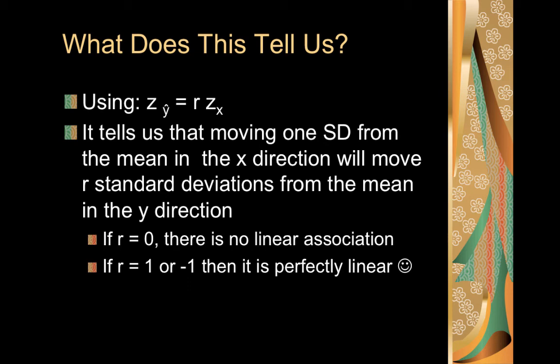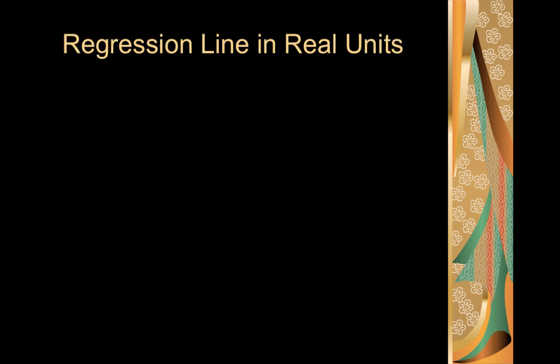Therefore, if r is 0, there's no linear association because we would multiply the z-score in our x direction by 0, so y would equal 0. It wouldn't work. But if r is 1 or negative 1, then it's perfectly linear, because we end up with the z-score for our y values equaling the z-score for our x values, and it'll end up being a perfectly linear line. The biggest purpose for this is that it gives us a way to end up calculating our slope and y-intercept using our correlation coefficient, using our regression line in real units instead of standardized units. You won't have to create scatter plots in standardized units. We'll only use our real units.